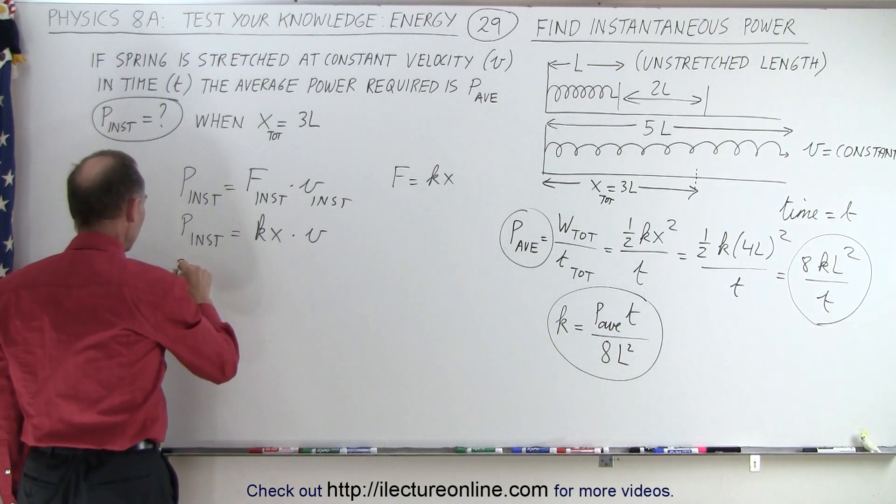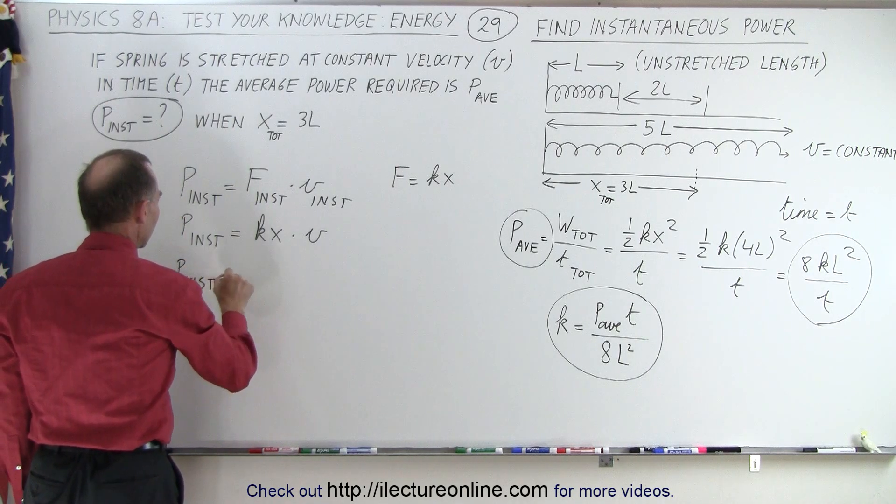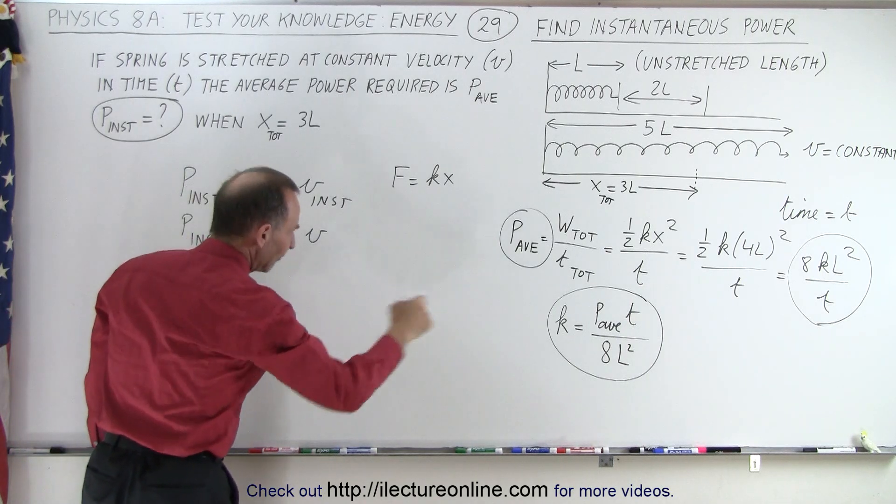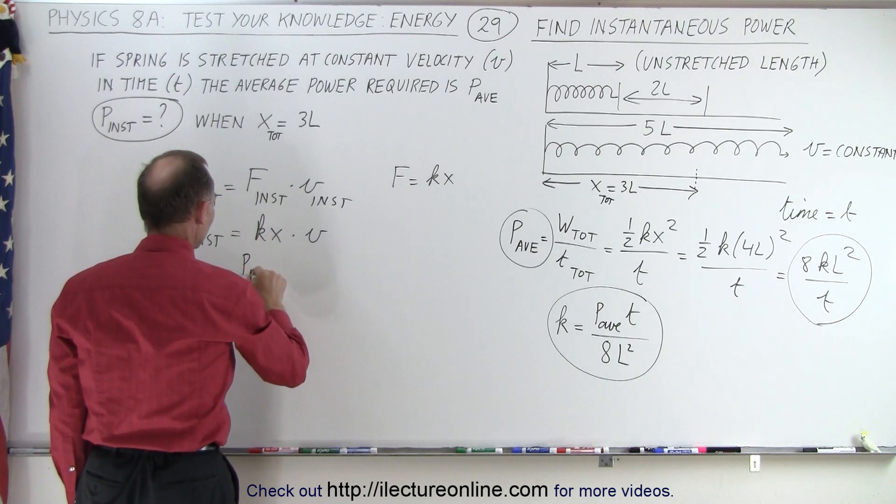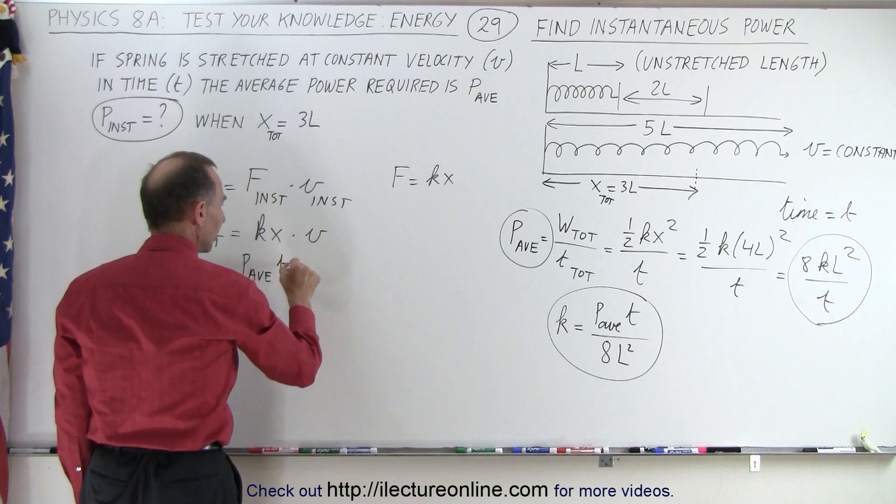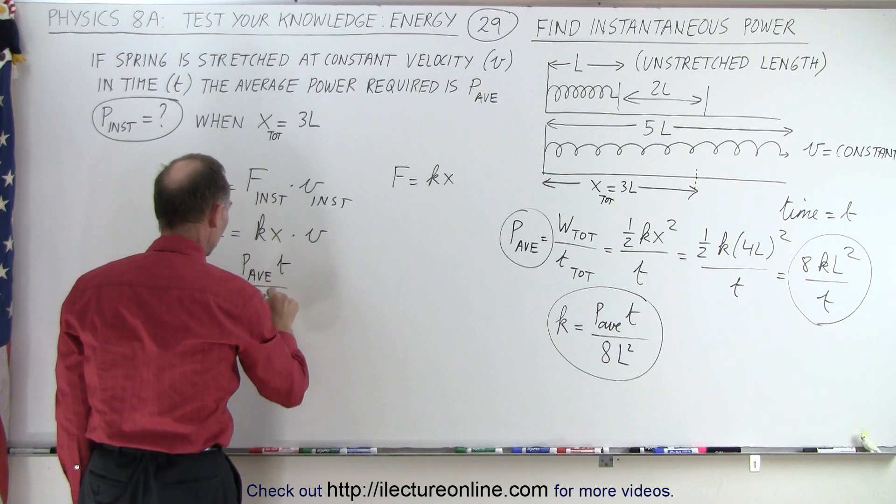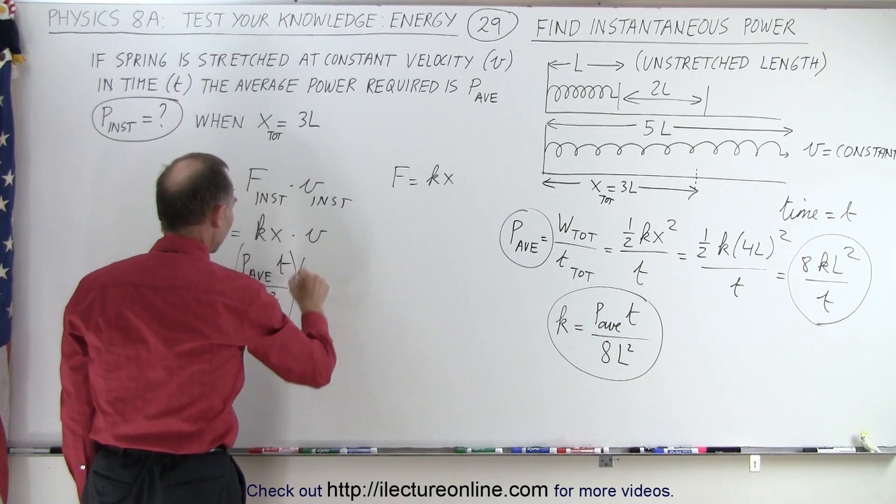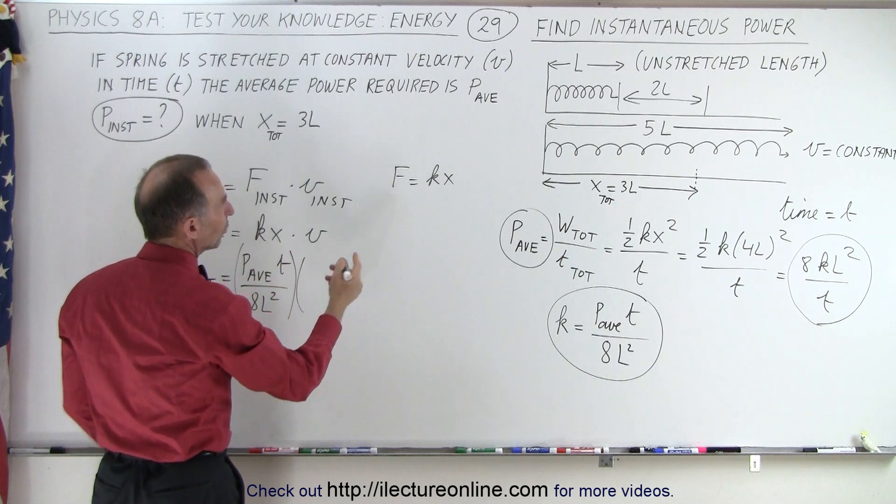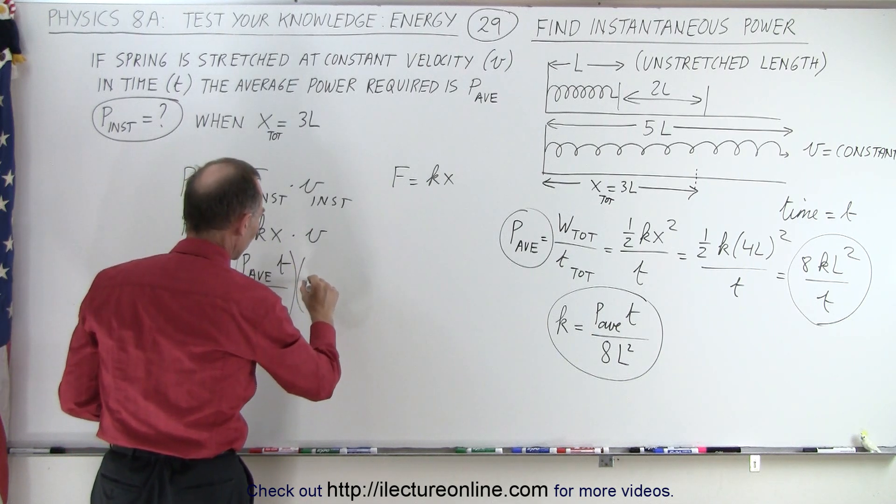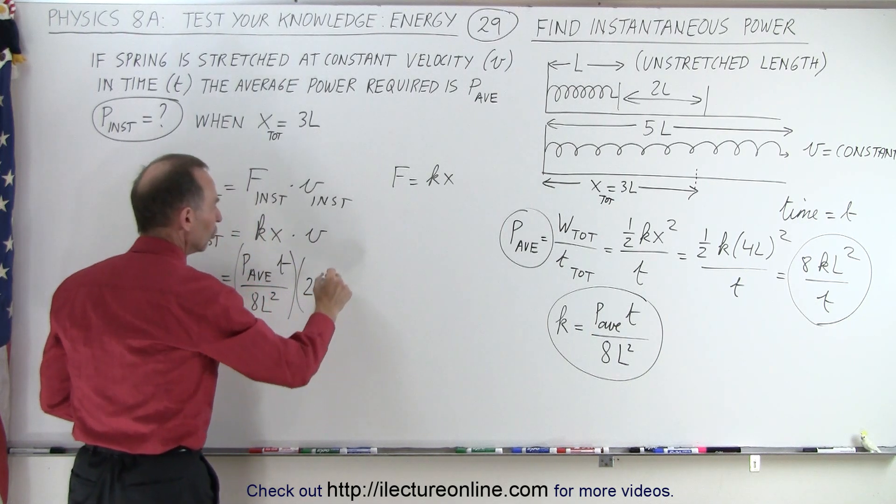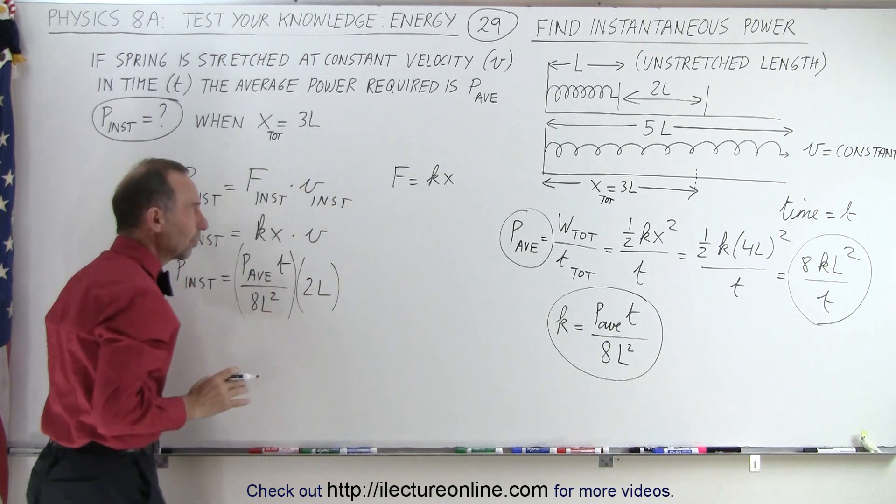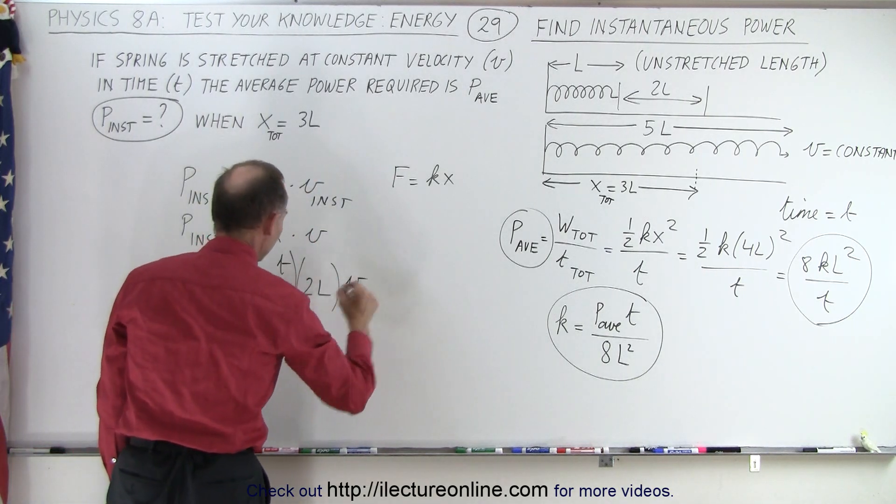So the instantaneous power is equal to K. Now we have a value for K, that would be the average power times T divided by 8L squared. We multiply that times X. Now X in this case will be 2 times L, because we stretched an additional 2L over the already original length L, and then we multiply that times V.